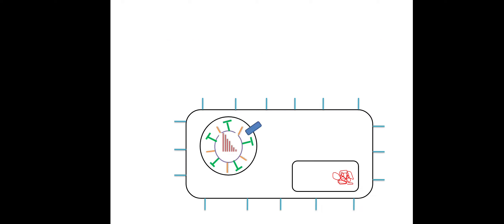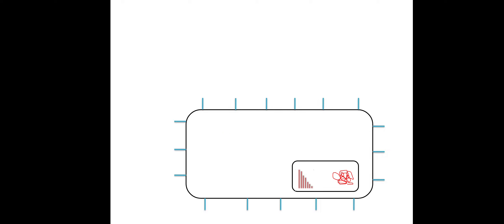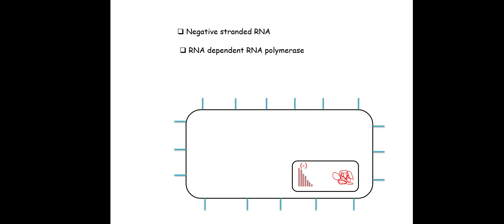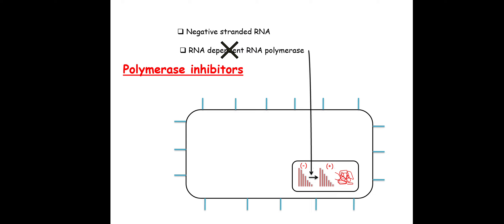Next are the polymerase inhibitors. Once uncoating is completed, the negative-stranded RNA moves into the nucleus and makes RNA-dependent RNA polymerase, which converts negative-stranded RNA into positive-stranded RNA. Polymerase inhibitors inhibit this RNA-dependent RNA polymerase. A recently developed polymerase inhibitor for influenza is baloxavir, which inhibits multiplication of the influenza virus by inhibiting the polymerase enzyme. A special point: baloxavir is given as a single dose to decrease the duration of influenza symptoms.